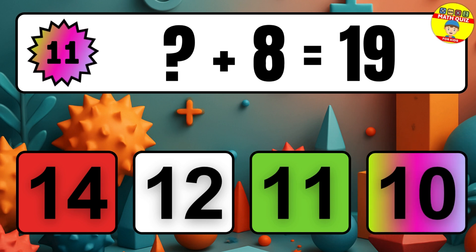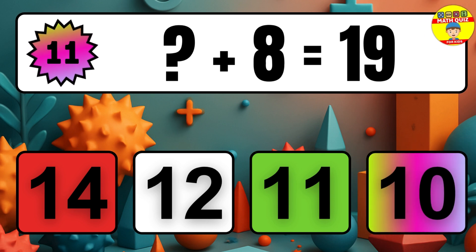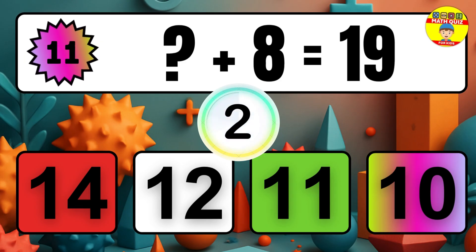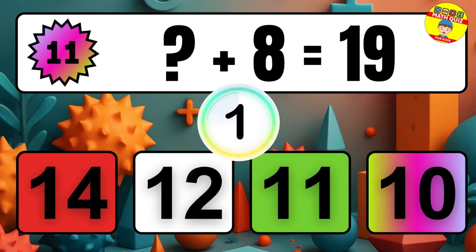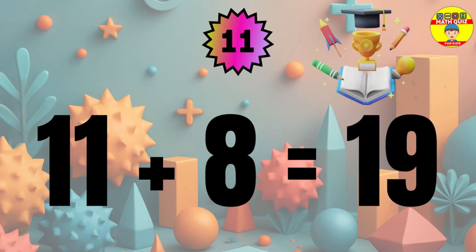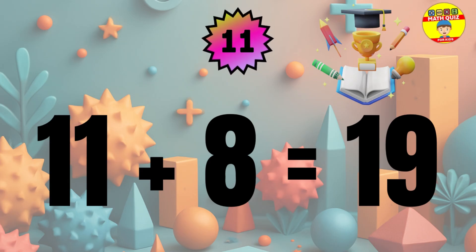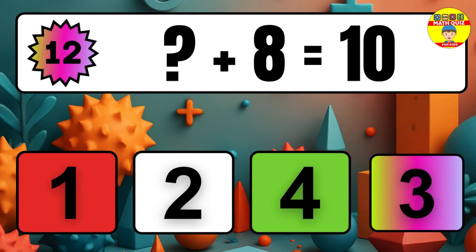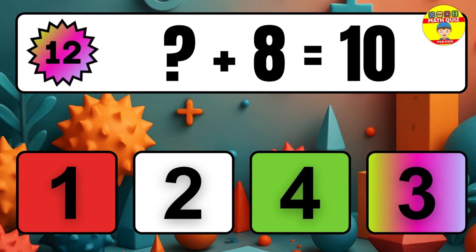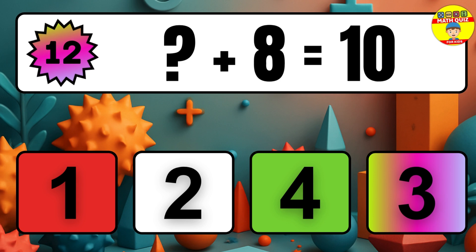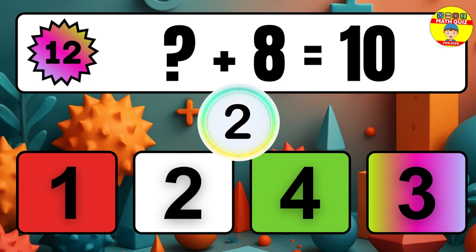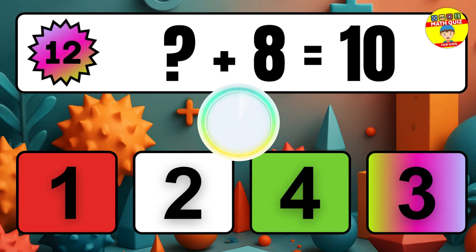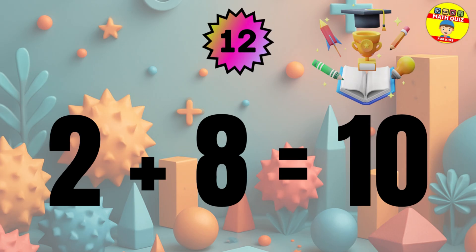Question 11. What number plus 8 equals 19? Question 12. What number plus 8 equals 10? The missing number is 2.